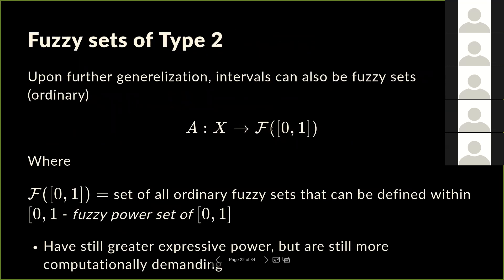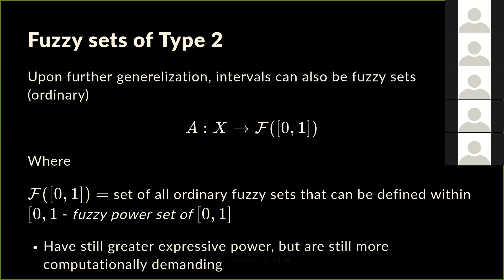Even crisp sets can be encapsulated in fuzzy sets — they're a type of fuzzy set. So all properties generalized for fuzzy sets also apply to crisp sets in the same way that crisp set operations would have applied.